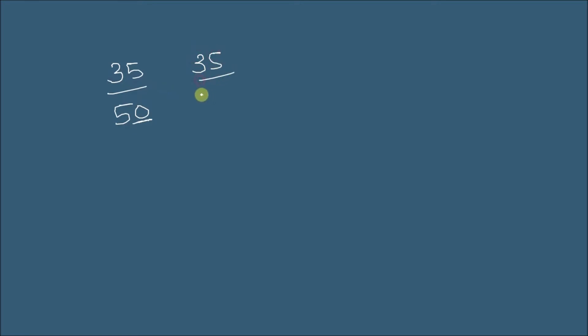I am taking another example from your book: 35 divided by 50. The first step — when you see the zero in the denominator, we can write it as 35 divided by 5 into 10. Since there is a 10, we put a decimal, so this becomes 3.5 divided by 5.